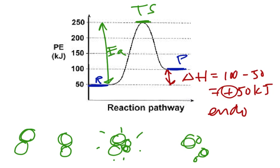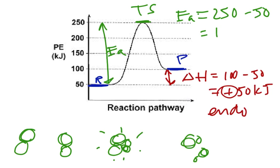That's always going to be uphill, so it's always going to be a positive value. In this case, E sub A is final minus initial, so 250 for the transition state minus 50. So we can see that's going to be a positive 200 kilojoules for the activation energy.